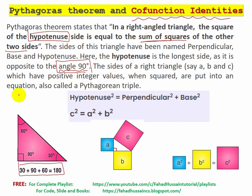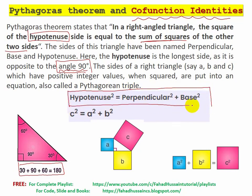If you look at the Pythagorean theorem represented in this form: hypotenuse squared is equal to perpendicular squared plus base squared. In short, we can write it as A squared plus B squared equals C squared.